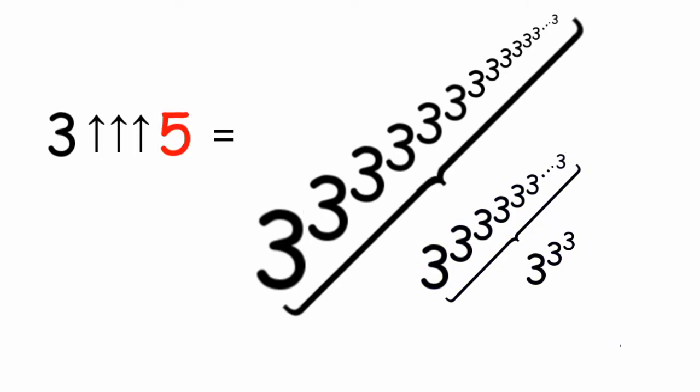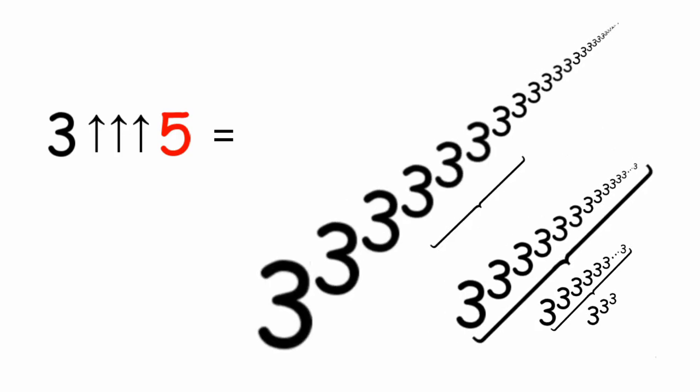If we change 4 to 5, that's 3 to the power of 3, this many times. 3 arrows can also be written like this. We're just saying that we have 3 arrows in our operation.